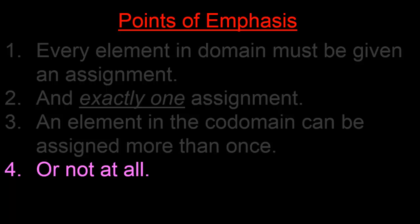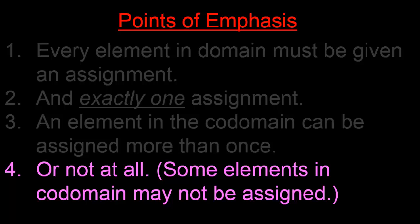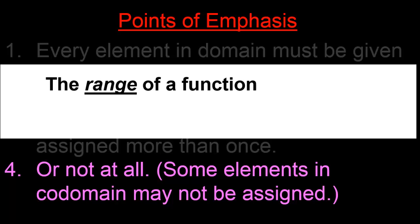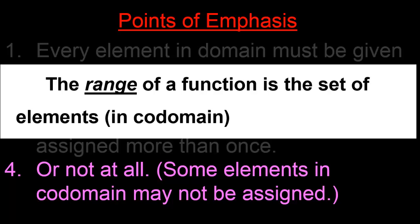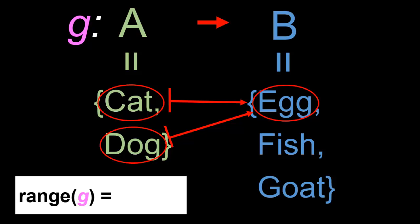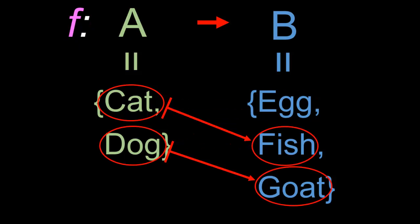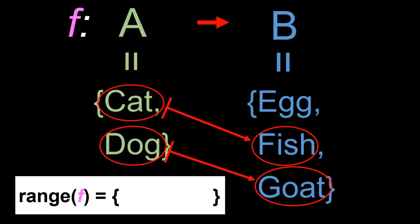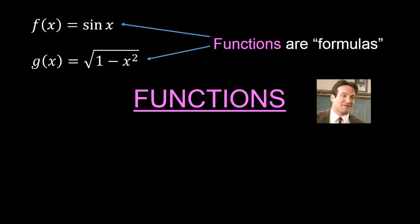Some elements in the co-domain might not be assigned at all. We can now take this opportunity to introduce a new term: the range of a function. The range of a function is simply the set of elements in the co-domain which are assigned. So for example, in the case of function g, the range of g is precisely the set consisting of just egg, because egg is the only element in the co-domain B that is made an assignment. Similarly, the range of function f is precisely the set consisting of fish and goat, because fish and goat are the only two elements in B which are made an assignment. In the next video, we'll take a closer look at why Robbie Williams gets so upset when people think of functions as formulas or as machines.